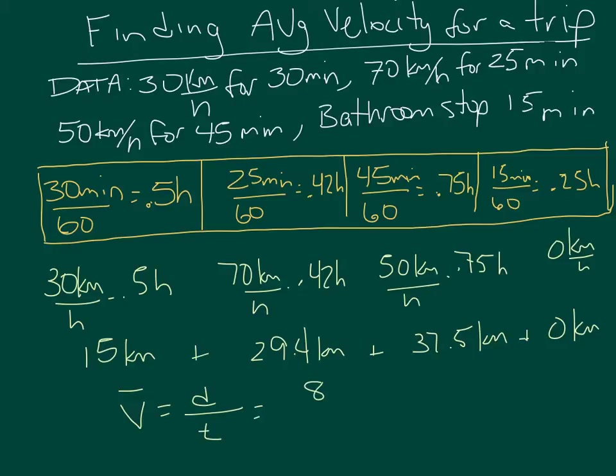The total time it took in hours can be found by adding up the 0.5 hours, the 0.42, the 0.75, and the 0.25. Add up all those times and that'll give us a total time of 1.92 hours.